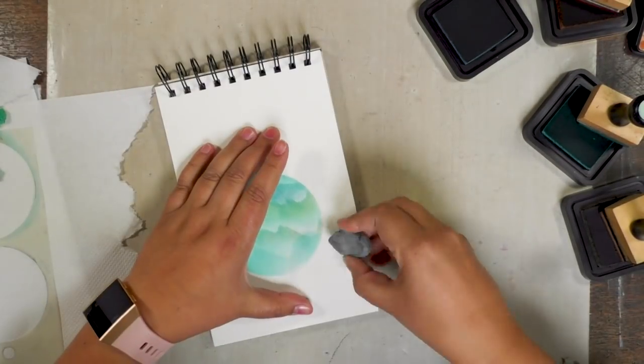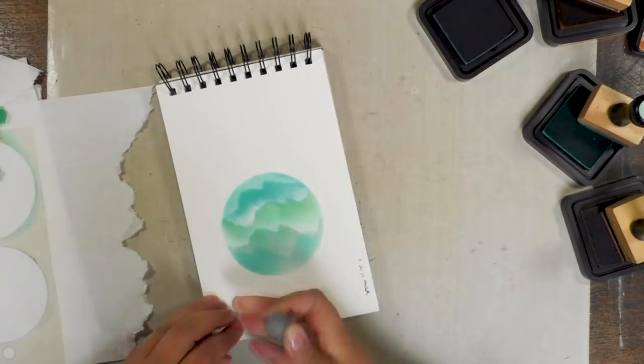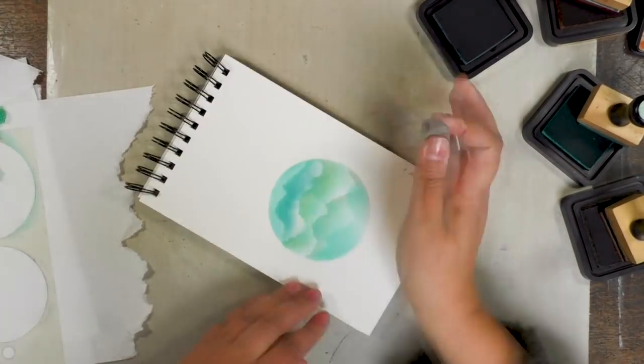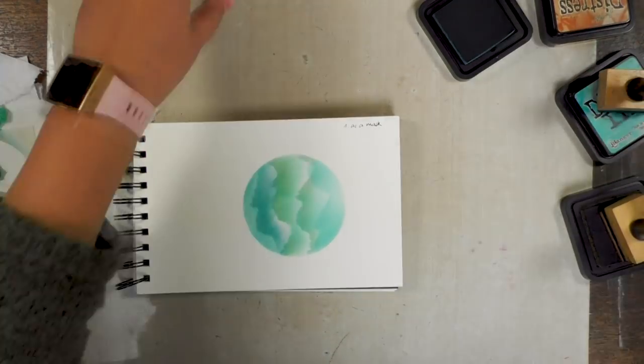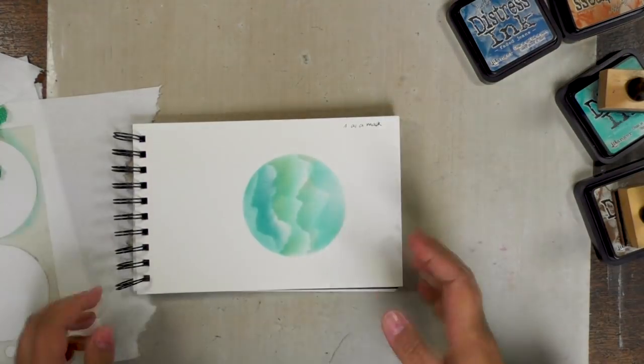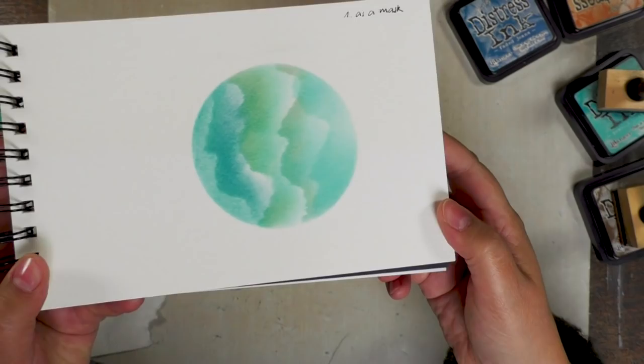I did have some ink go where it wasn't supposed to go but that's okay, nothing my kneadable eraser cannot solve. And there we go, technique number one: use kitchen roll as a mask.